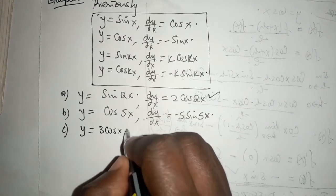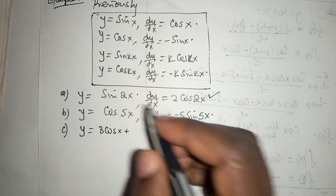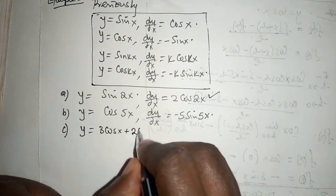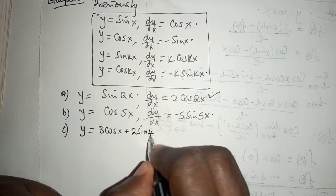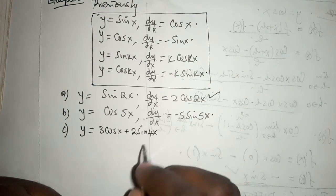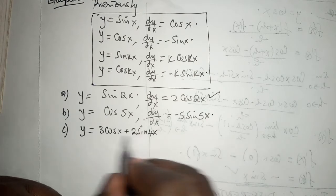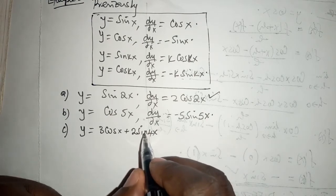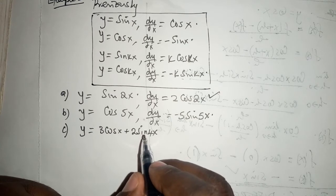And part C: if y equals 3 cosine of x plus 2 sine of 4x, then this one you realize that it is in two parts and we have to differentiate each one of them.